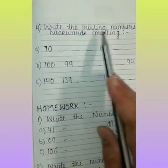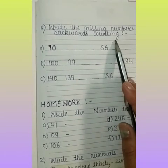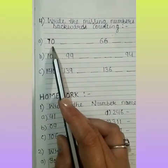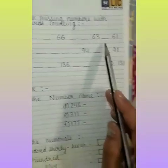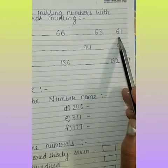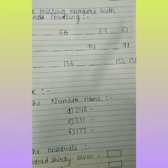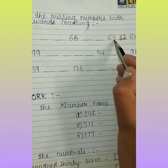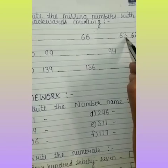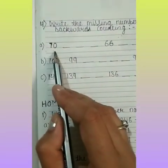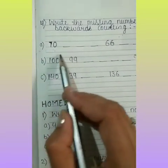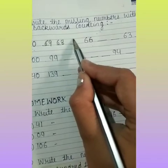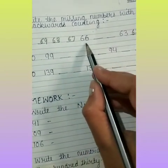Next question, number 4: write the missing number — backward counting. Backward counting means we have to count from back. Number A is 70. Let's start counting back: 61, 62, 63. Also counting back from 70: what comes before 70? 69, 68, 67, 66 is already given.